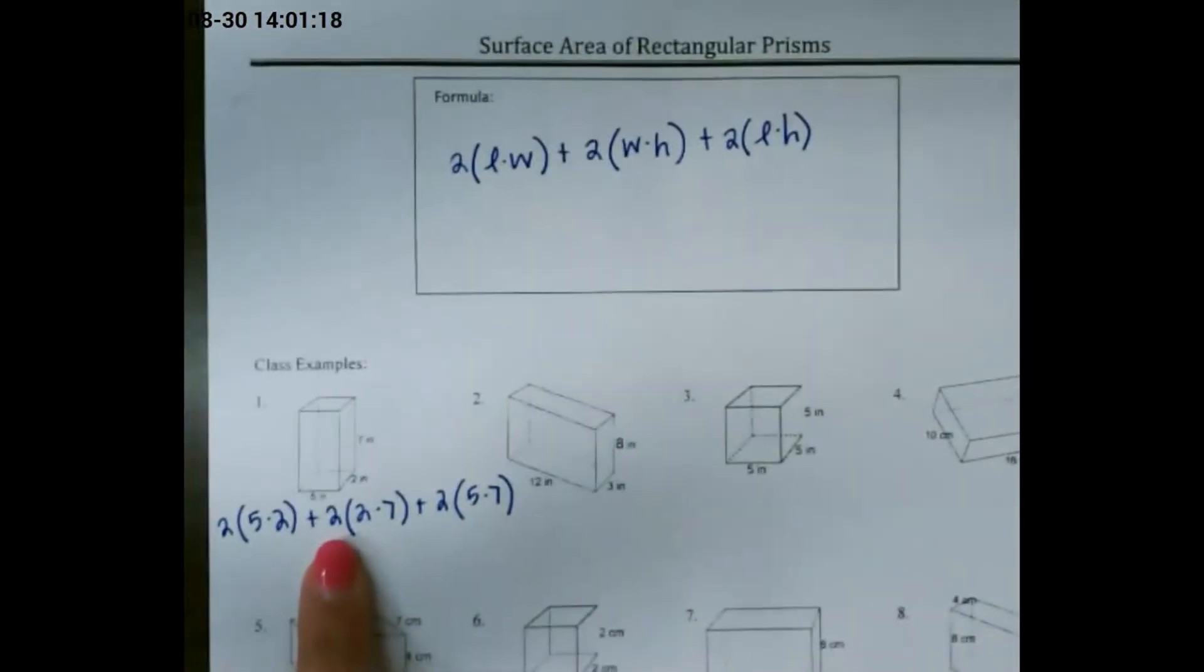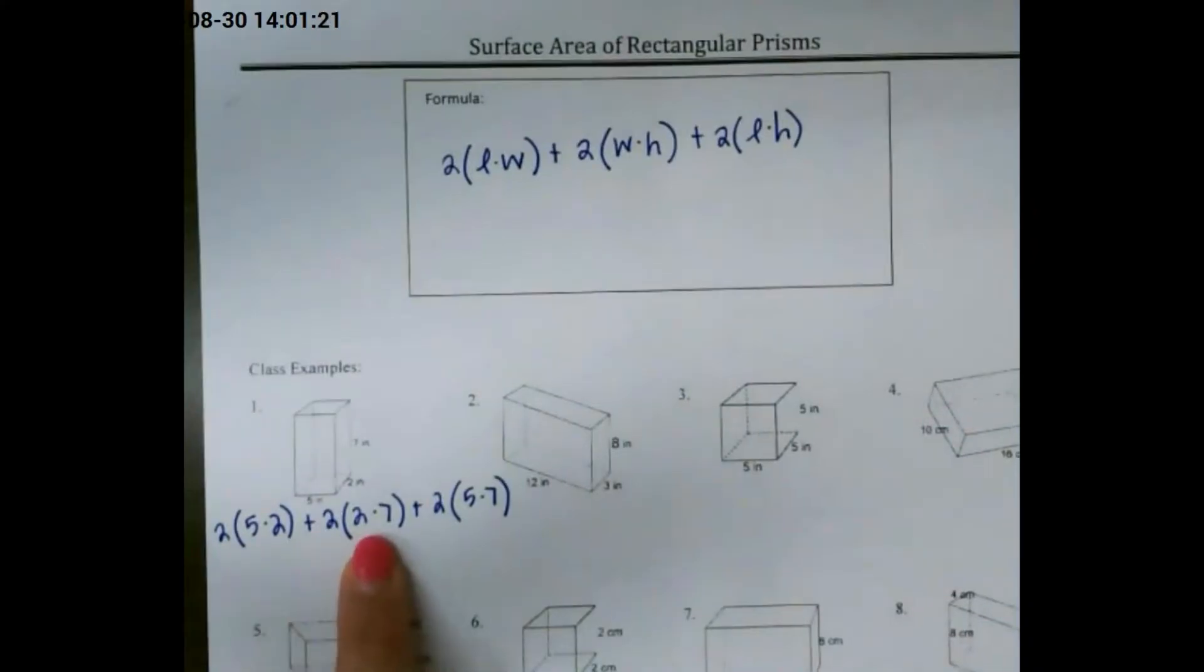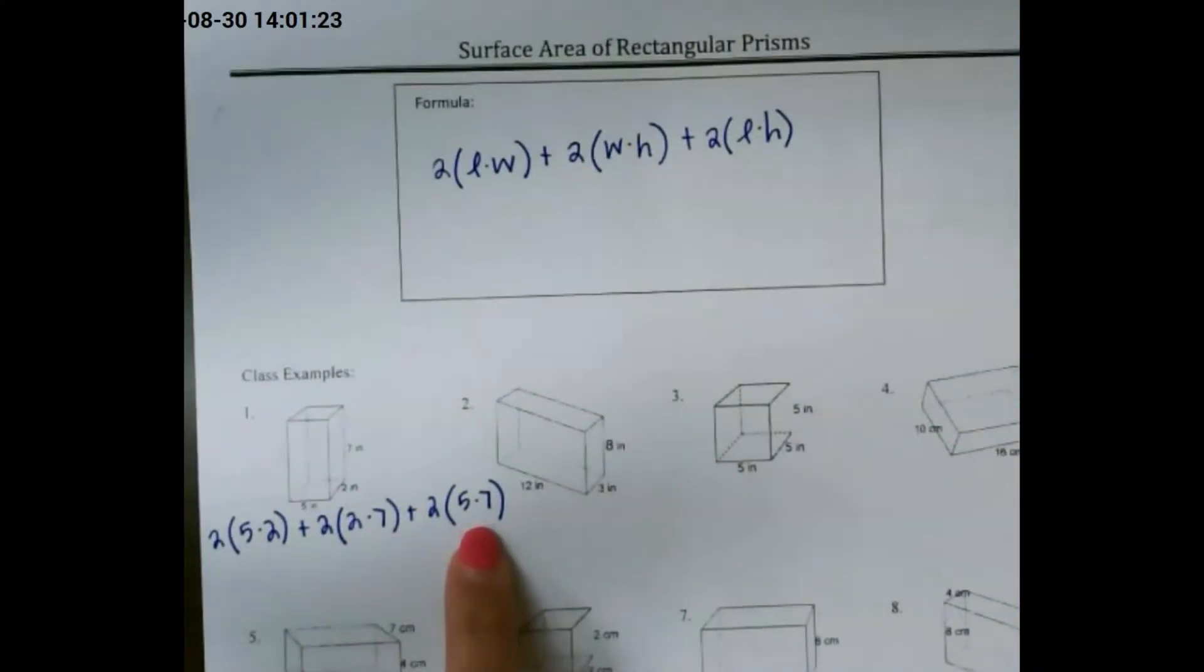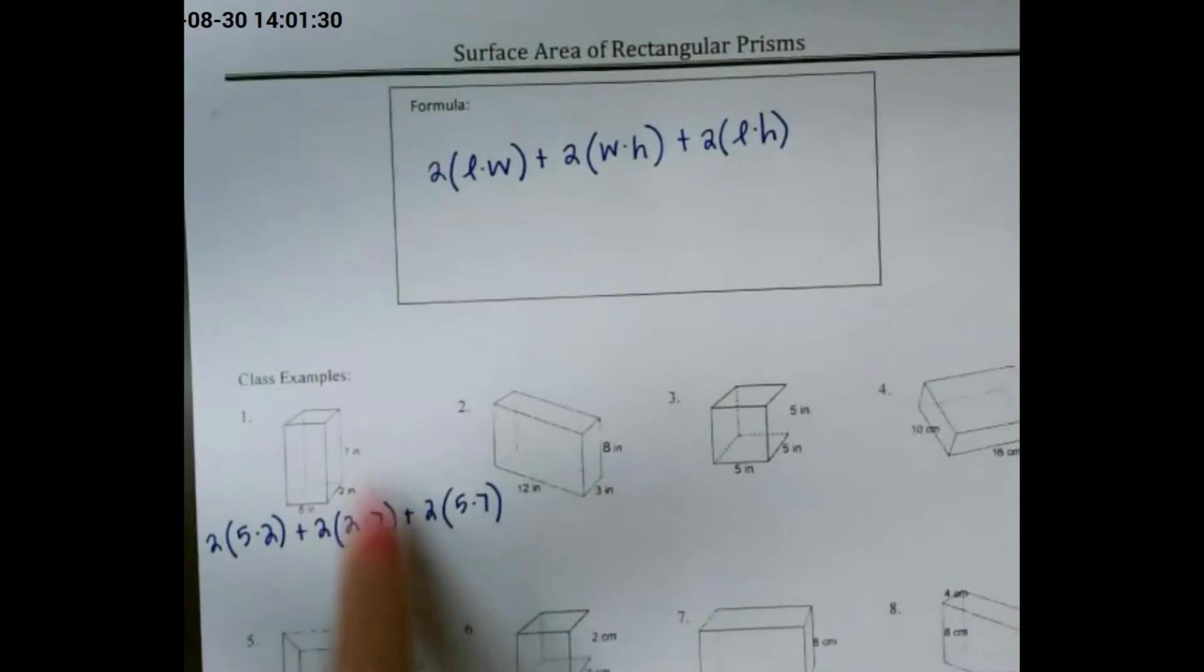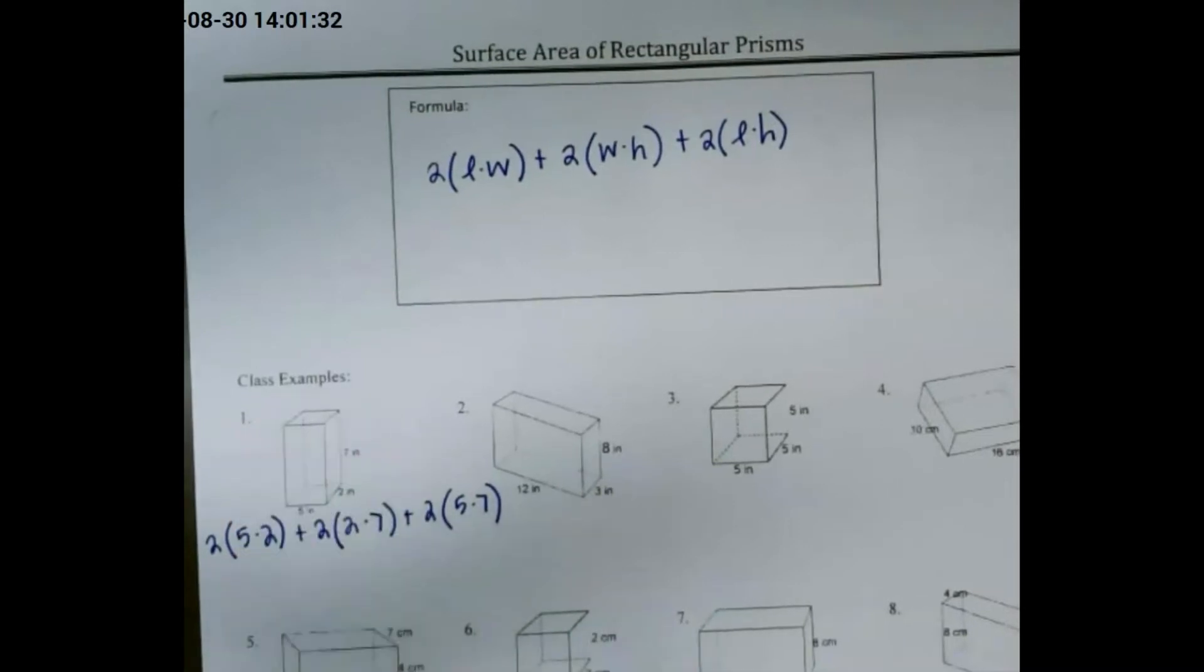For our first example, we use 2 of the length and width, 2 of the width and height, and 2 of the length and the height. This is going to give us the area of each side individually, and each side has 2. The front and the back, the top and the bottom, and the two sides.